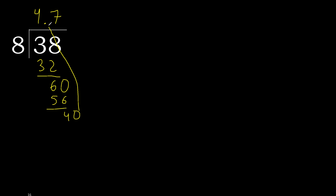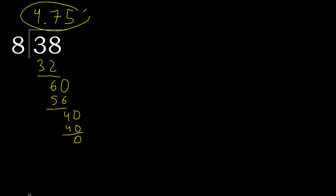Complete with 0 point: 40. 8 multiplied by 5 is 40. Subtract 0. Therefore finished: 38 divided by 8 is 4.75.